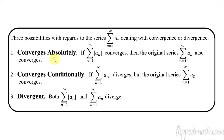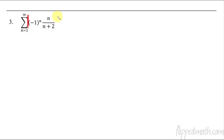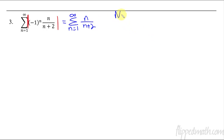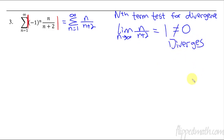So that was our second example. The next one we're going to do is where both diverge. Even though we already know they both diverge, we'll still practice setting up the absolute value first — because if the absolute value converges, you're done. So taking the absolute value of this series gives us the sum from one to infinity of n over n plus two. We can check this using the nth term test for divergence: the limit as n approaches infinity of n over n plus two equals one, and since it doesn't equal zero, we know it diverges.